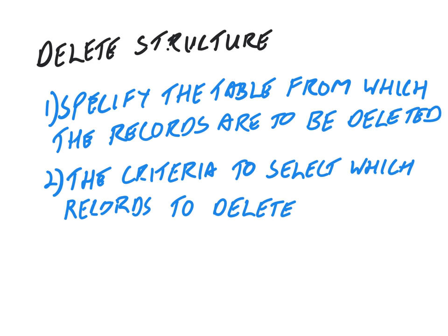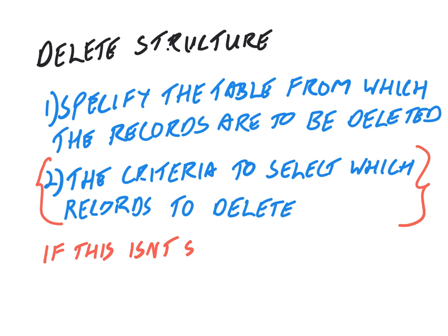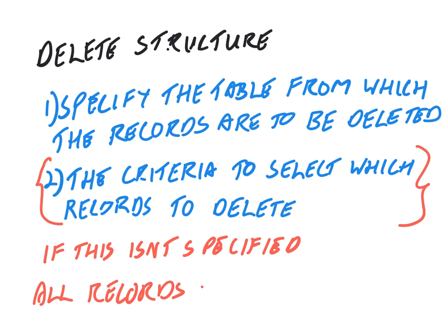The structure of a DELETE statement is that you specify the table from which records are to be deleted, and then you specify the criteria to select which records to delete. Importantly, if you do not specify which records to delete, you have the unfortunate consequence that all records will be deleted — every single row from your database.